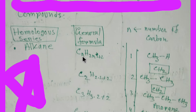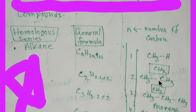If you take n=2, you get 2×2+2 = 6, so C₂H₆. You are getting CH₃CH₃, so the number of hydrogens is 6. The difference between these two compounds is CH₂.